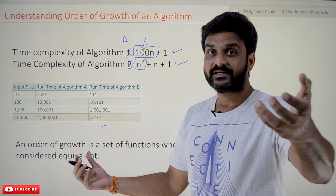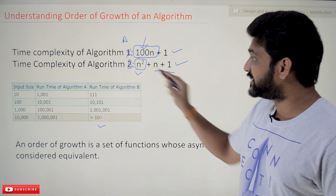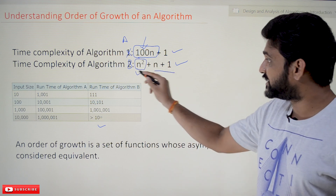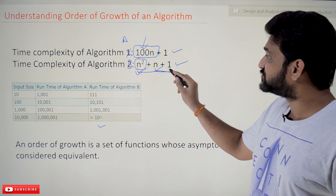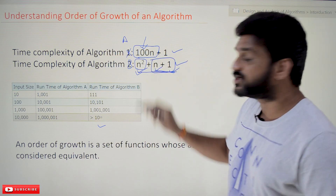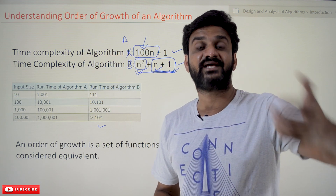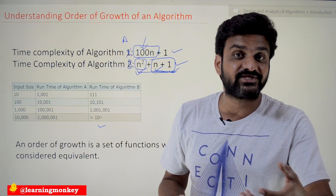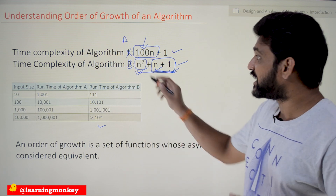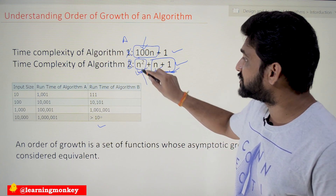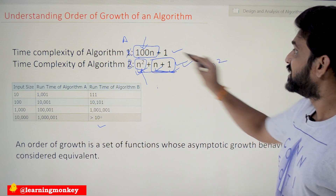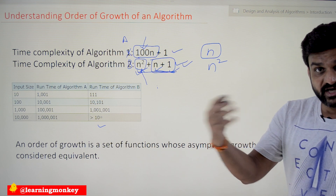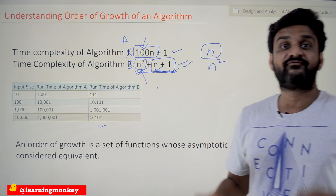Similarly, the lower-order terms — this is what we call them, as opposed to the higher-order term which has the highest power — so in this entire expression the higher-order term is n squared, whereas these are the lower-order terms. The significance of these lower-order terms is also getting decreased as the input size increases. The term which has the maximum influence on the rate of growth — the number of steps executed by the algorithm — is the higher-order term. So for both algorithms, the higher-order term is n squared, and from now on we are going to consider only the higher-order terms.